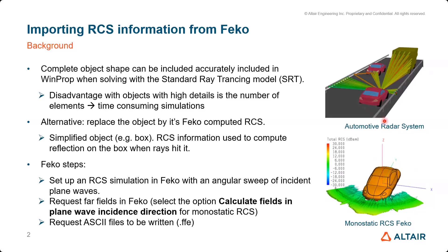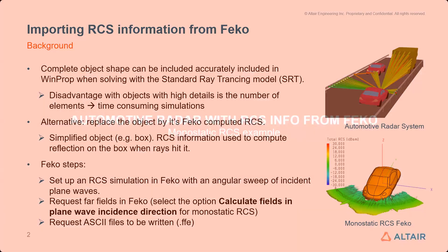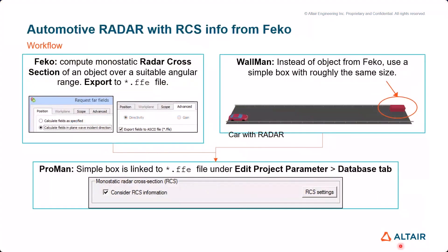We can replace that simplified object's geometry with the computed RCS. The main condition is that we perform far-field computations within fecal, and as my colleague Jayun just showed, we should choose the option to calculate the fields in the plane wave incident direction. This type of application — previously a supported feature in WinProp — is the monostatic RCS. We can compute the monostatic RCS from fecal and input it into WinProp. You should also not forget to save the output files in ASCII format in fecal, and it is that saved ASCII file that will be used for the computations. In the WinProp interface, when computing the monostatic radar cross-section for an object, you choose 'calculate fields in plane wave incidence.'